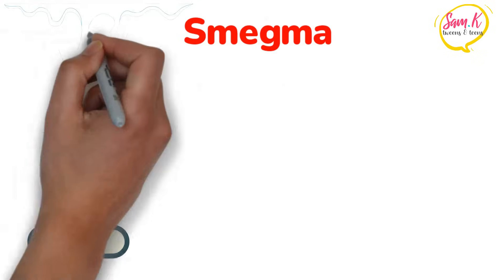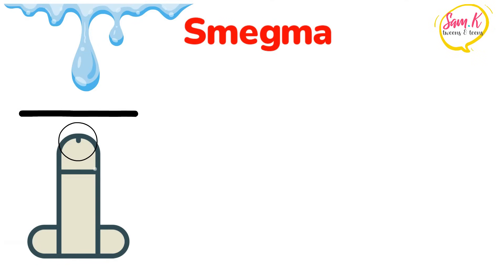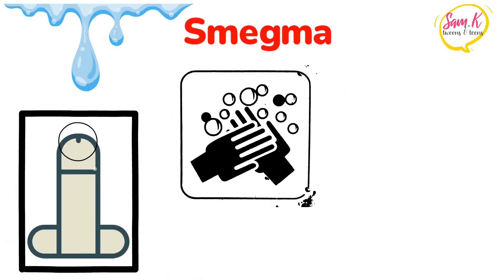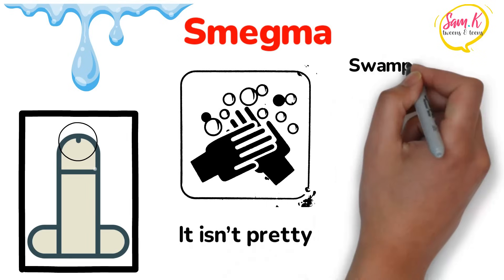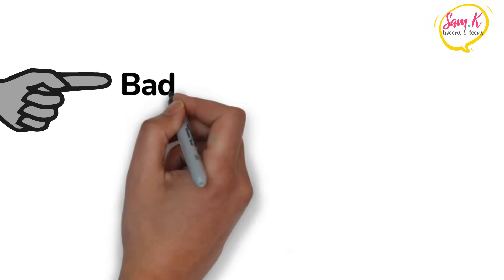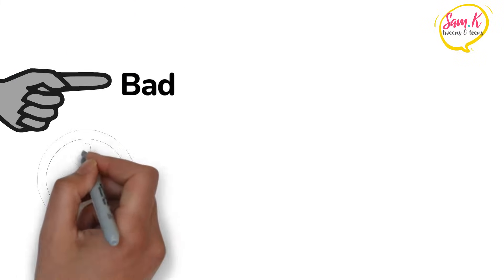That cheesy, rancid-smelling substance that collects under the foreskin and around the glans or head of the penis. Smegma is actually a natural lubricant that prevents your penis from drying out, but if you don't regularly clean up the excess, let's just say it isn't pretty. I've heard kids being called swamp crotch before, and it's not a nickname you want for yourself.